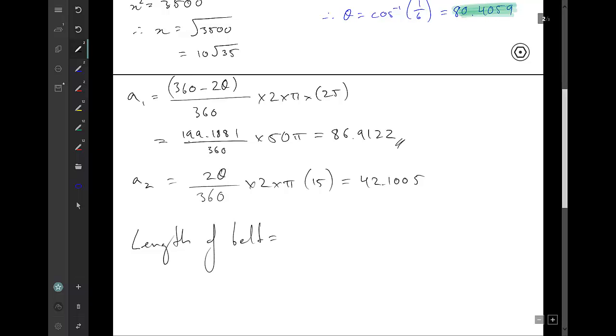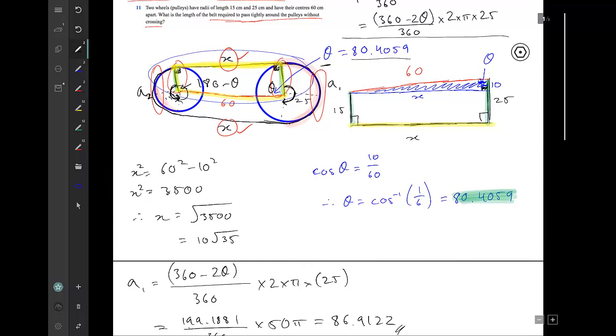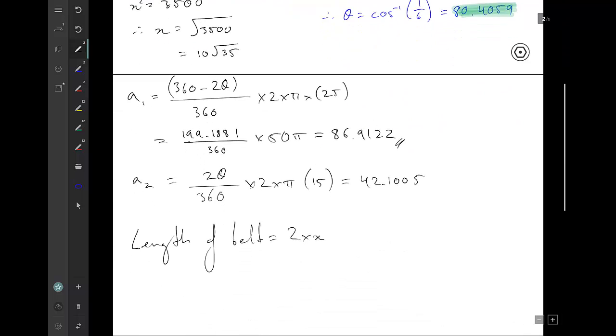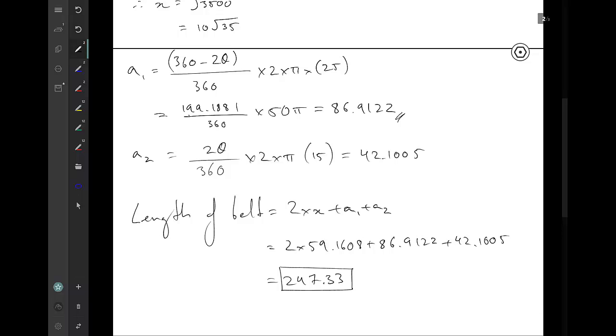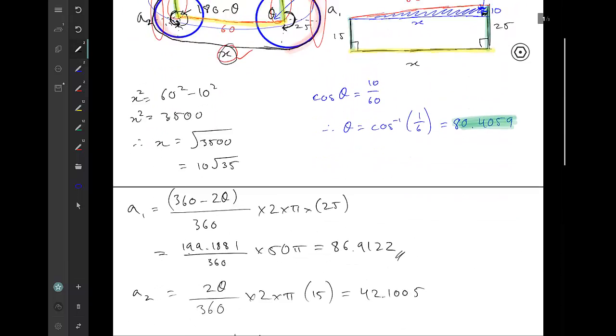So now I've got all my elements. Length of belt is equal to 2 times x, I have 2 x's because one for the bottom one for the top, plus a1 plus a2. So what that should look like is 2 times 59.1608 plus 86.9122 plus 42.1005. Put that on the calculator and you should get 247.33 centimeters. That's it, that's our answer.